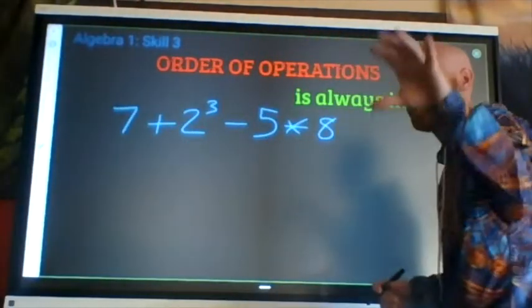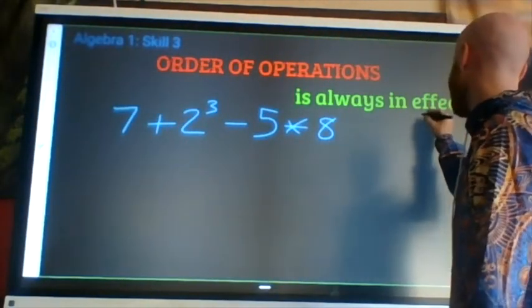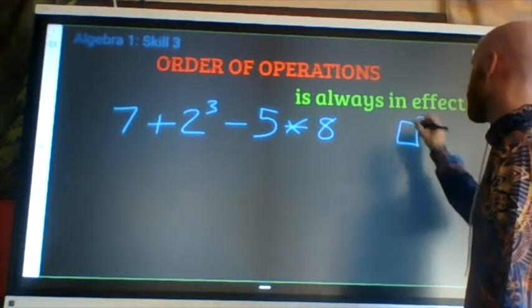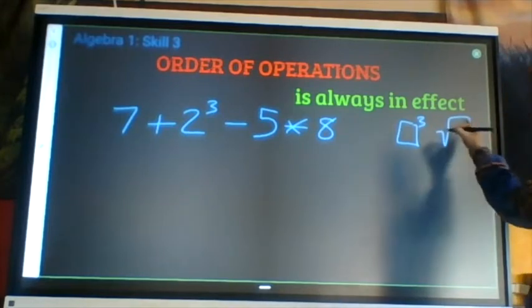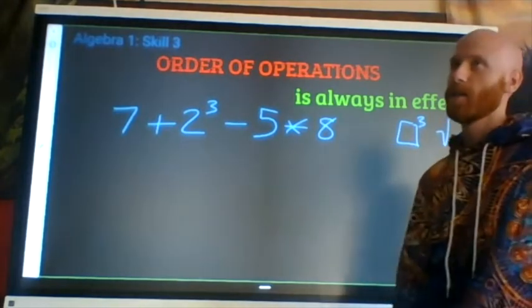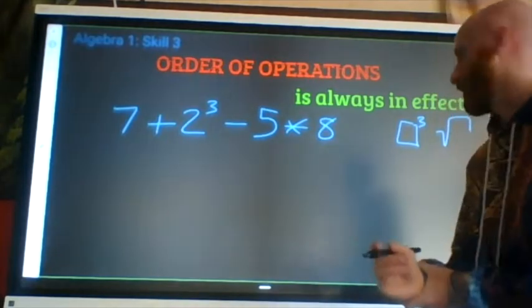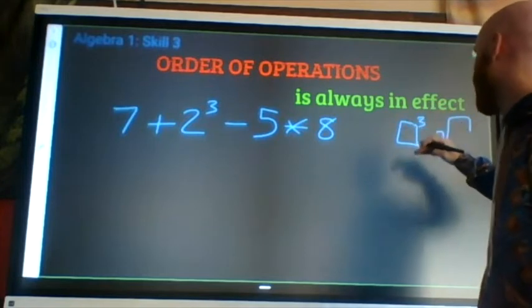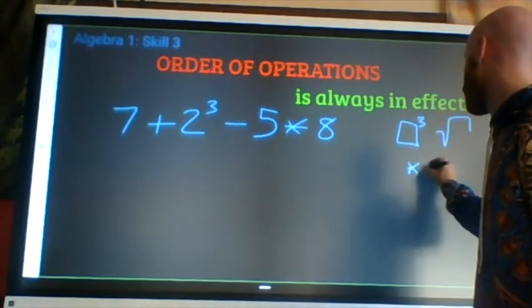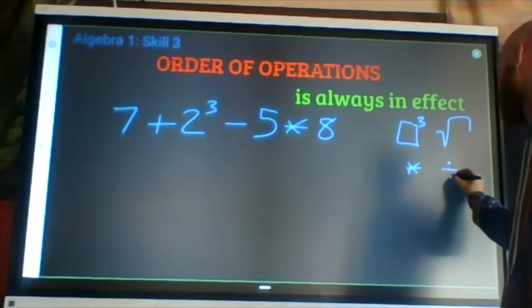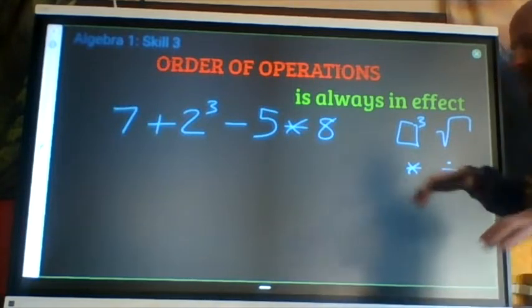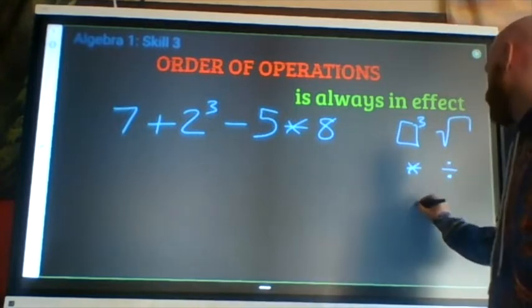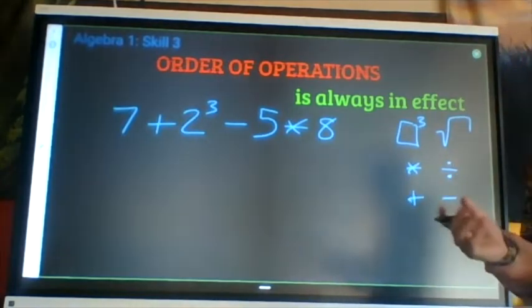So the most powerful operations that you're going to deal with this year are exponents, right? Exponents and square roots, which are a kind of exponent you will eventually discover. Exponents and roots are the most powerful. And then at a level below them, we've got multiplication and division. And the lowest level operations that you have, the least powerful operations that you have are addition and subtraction this year.